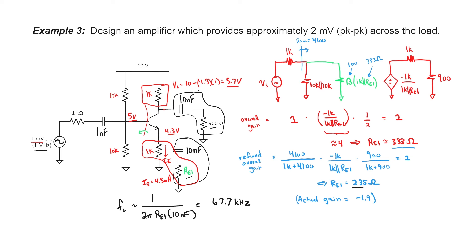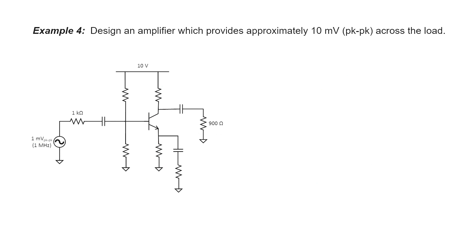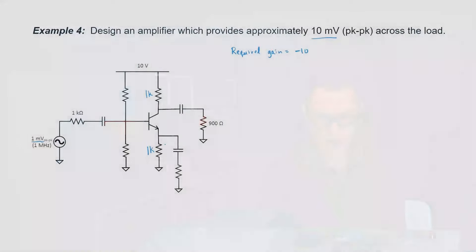This amplifier was a relatively easy design because the necessary gain was moderate. Let's now work an example where we need a little more gain. In this example, we again have a source at 1 millivolt peak to peak, and we're asked to design an amplifier which gives us 10 millivolts across the load — so our required gain is going to be negative 10. I'm again going to choose my resistors at the collector and the emitter to be 1 kilohm. We want these resistors to be small but not too small: making them too small causes the emitter current to grow, the base current to grow, and could make our estimation of the base voltage incorrect.